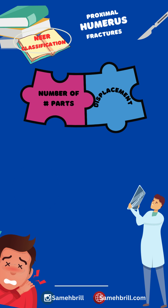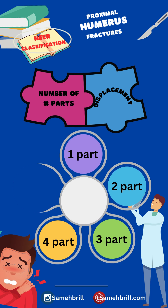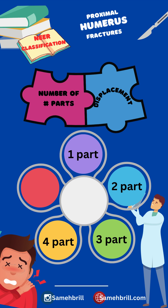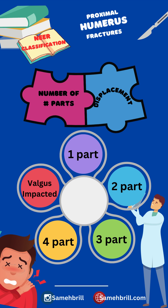Proximal humeral fractures can be one, two, three, or four part fractures. A fifth type was added by Neer in 2002, which is the valgus impacted four part fracture.